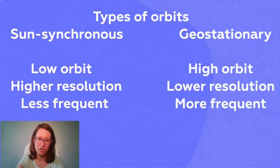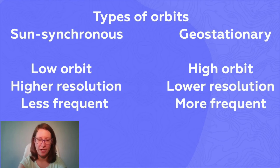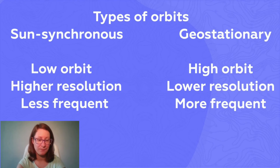Geostationary high-orbit satellites allow us to get low-resolution imagery over a larger area, but as frequently as every several minutes.